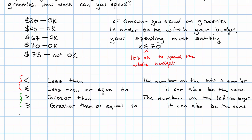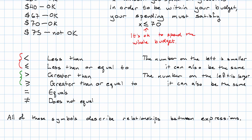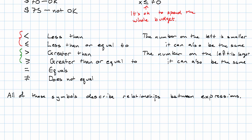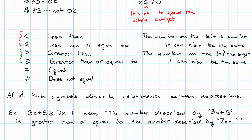Now, these are the same sorts of symbols as equals and does not equal. All of these symbols represent a relationship between expressions. So, for instance, when we say 3x plus 5 is greater than or equal to 7x minus 1, what we're saying is the number described by 3x plus 5 is greater than or equal to the number described by 7x minus 1. Like an equation, this gives a restriction on what values x might have.